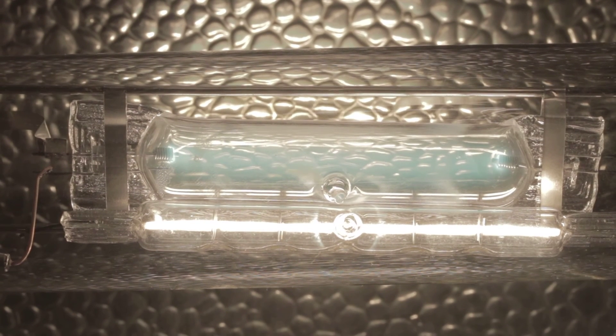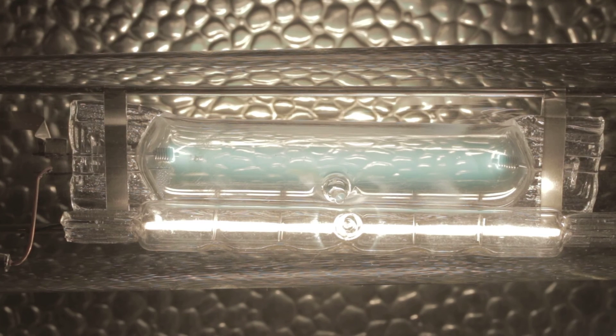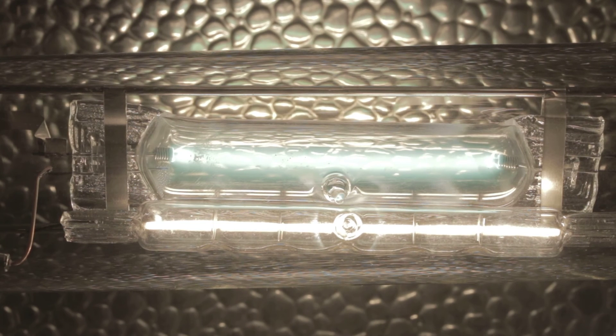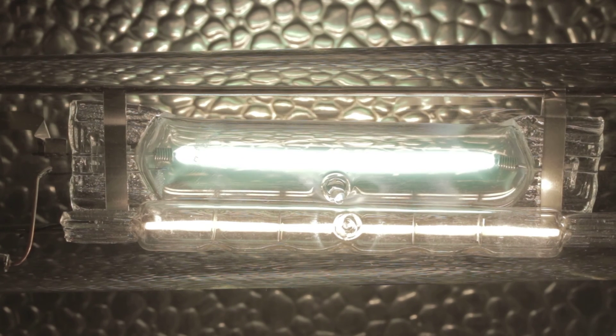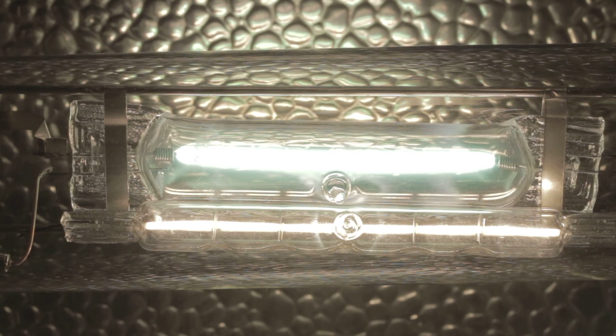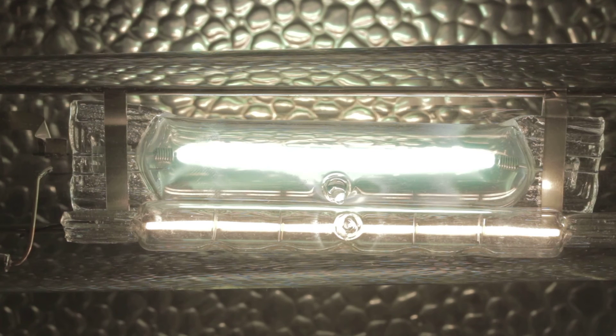As you can see there. As the arc tube gets brighter, the halogen dims off.